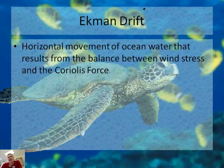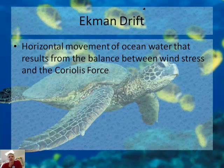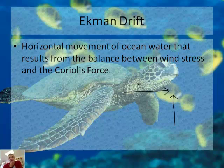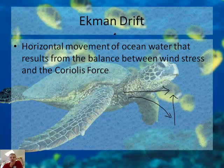That leads us to the Ekman Drift — a somewhat convoluted topic from the textbook. Dr. Shawn will explain it further, but essentially it's the horizontal movement of ocean water that results from the balance between wind stress and the Coriolis effect. You've got wind going in one direction, and the Coriolis effect pushing in another, and when you combine these forces you get a curve in the ocean currents — that's the Ekman Drift.